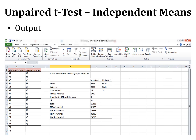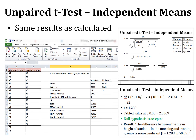The Excel output confirms the same results as calculated by hand: T value 1.288, degree of freedom 32, and critical value 2.0369 — all identical. The advantage of software is that it gives you the actual probability value directly, so you don't have to compare calculated and tabled values manually. The null hypothesis is accepted. In the next lecture, we are going to see how the paired t-test, which is the t-test for dependent means, is executed.